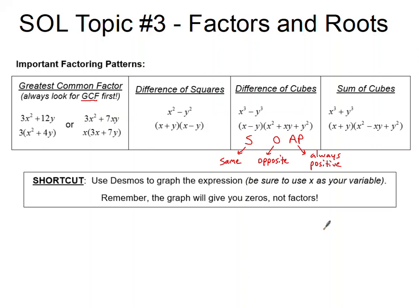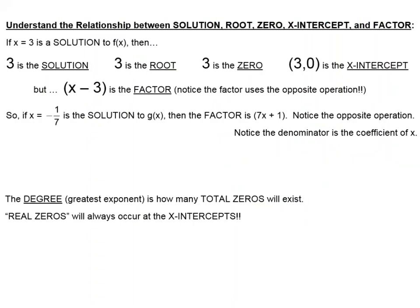If you forget how to factor, it's okay because Desmos will be able to help us. We're going to use Desmos to graph our expressions and find the factors that way. When we do this, we have to make sure that we use X as our variable. Also remember that the graph will only give us the zeros, and we'll have to convert them into factors. So let's look at the relationship between a solution, a root, a zero, and an X-intercept.